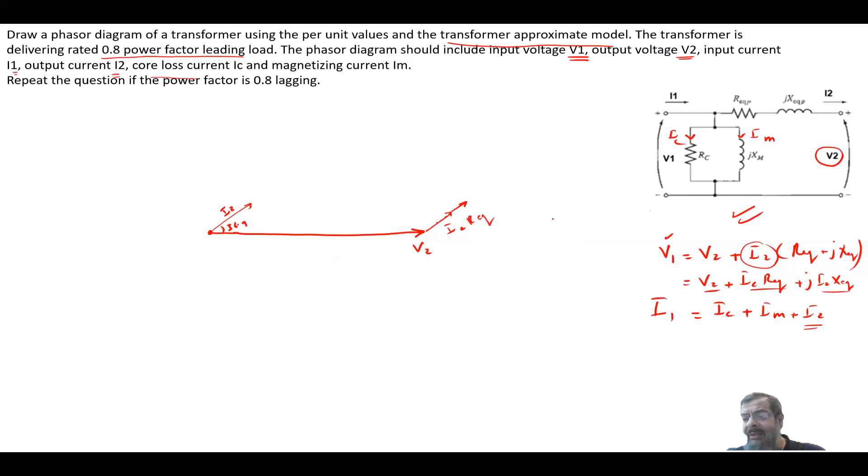Then we have the third vector, which is I2 X-equivalent, but there's a j, so this vector will have a 90-degree angle with the previous vector. This is j I2 X-equivalent. When we add the three vectors, we get V1.